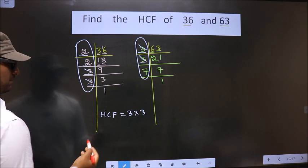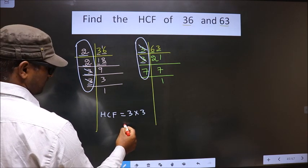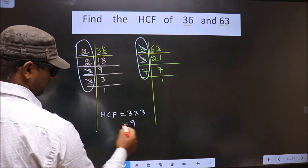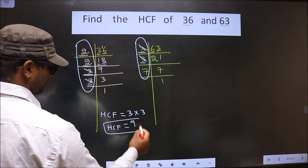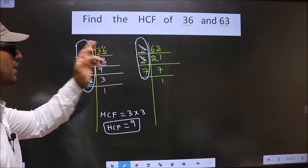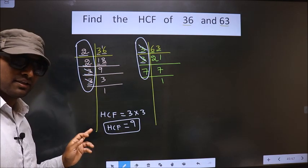No more numbers are present, so our HCF is 3 into 3, which is 9. So 9 is our HCF. Am I clear?